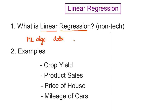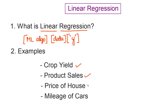Typically, we call the quantity of interest Y — we want to predict some item and we call that Y. The algorithm learns from the data to predict a quantity of interest. Examples of such quantities include crop yield, product sales, price of a house, and mileage of cars. There are many other real-world examples where you can use linear regression.